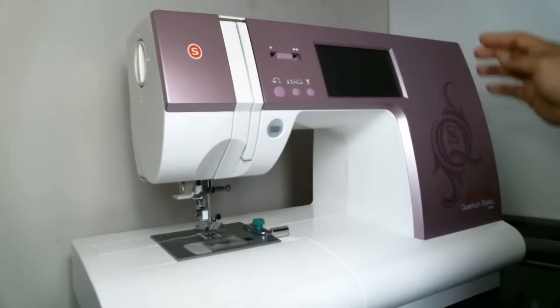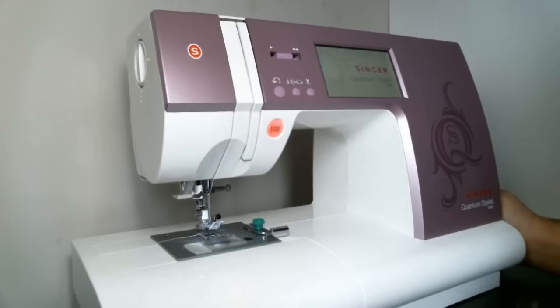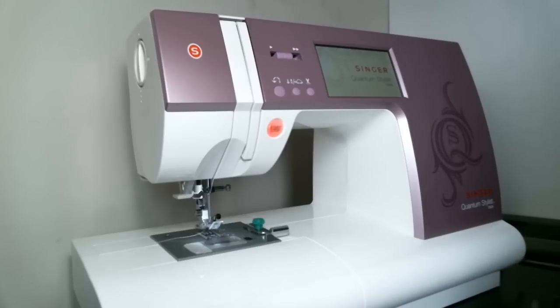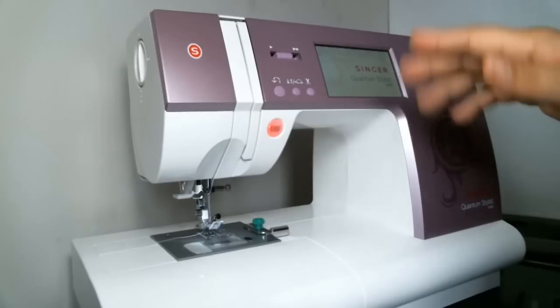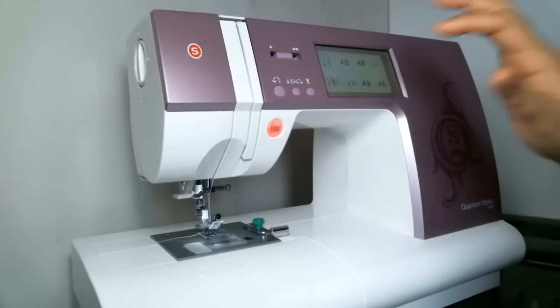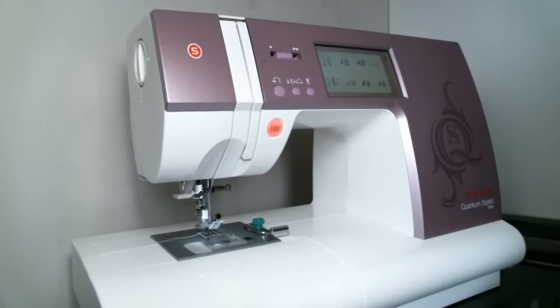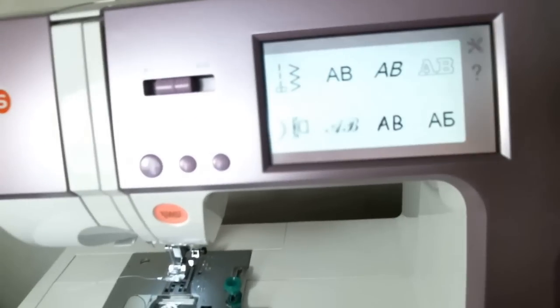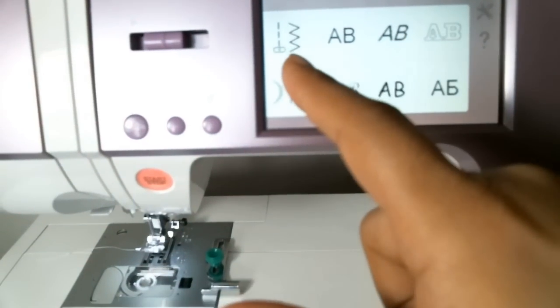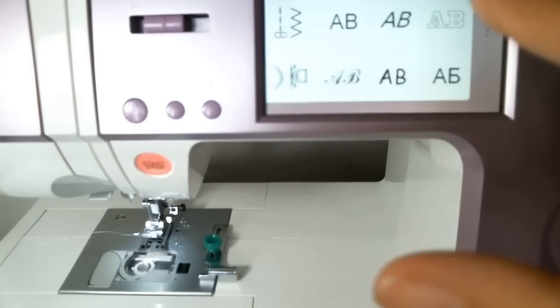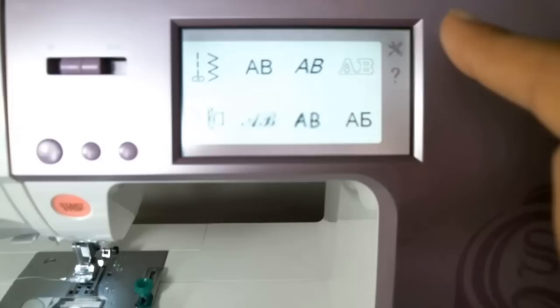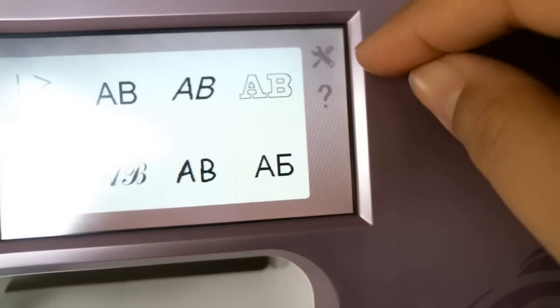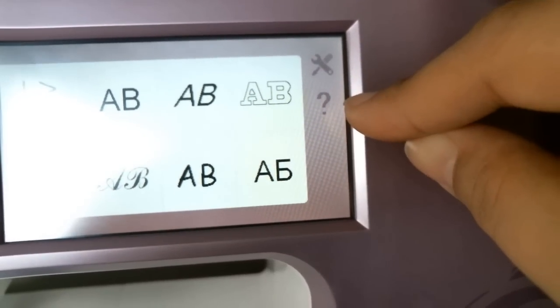And then as we turn it on, you'll notice how the LED screen here lights up. This machine is touch screen. So once you actually touch the screen, then the machine will boot up and you'll hear that as I touch it. And then once we turn it on, you will notice that there is the stitch button and then the lettering buttons and then here is the decorative stitches. And then here in the corner, you will see some tools here. That's basically settings. And then you will see the question mark, which that would be help.